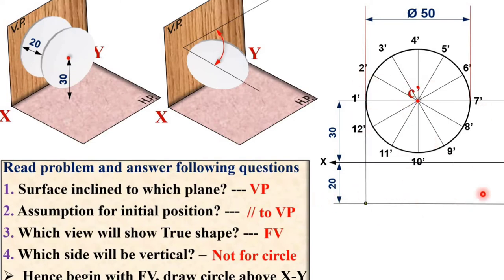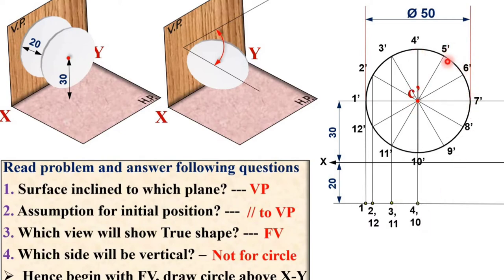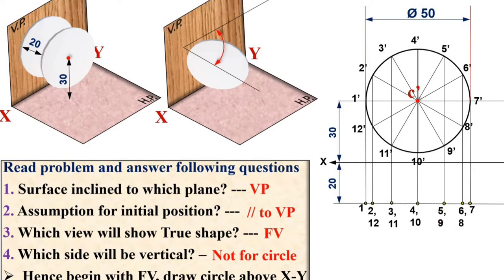Now draw projections from all points on the circle down to get the corresponding top view points. Point 2-dash and 12-dash project to give 2 and 12; similarly 3 and 11, then 4 and 10, then 5 and 9, then 6 and 8, and finally 7. Keep in mind this is the top view, so point names must be without a dash. In the top view, the circle appears as a straight line — this line is the top view and the center of the circle lies on it. This completes the first stage.